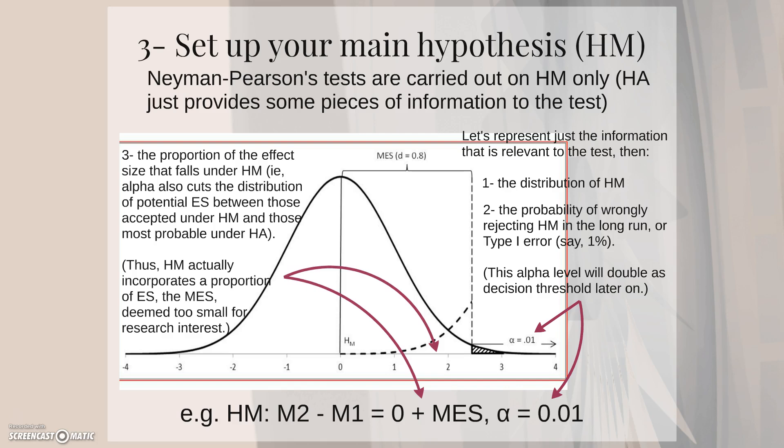And finally, the proportion of the effect size that falls under the main hypothesis. That is, the alpha level also cuts the distribution of potential effect sizes between those accepted under the main hypothesis and those most probable under the alternative hypothesis.